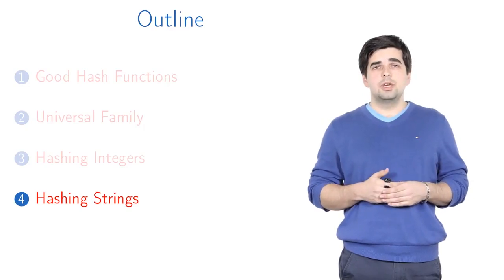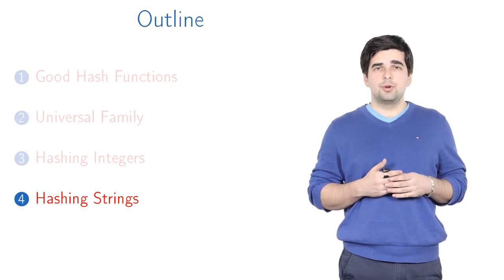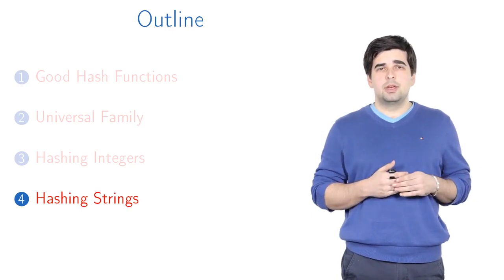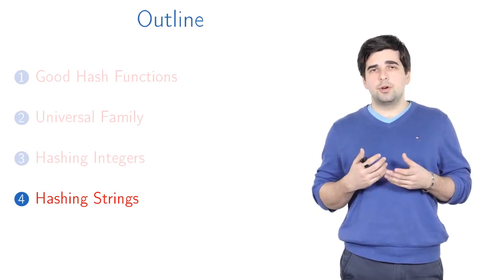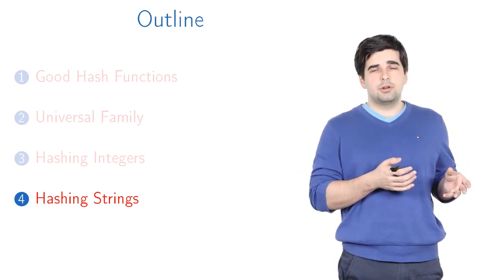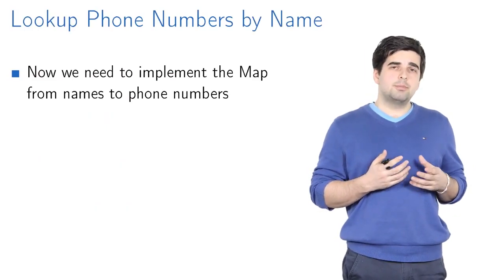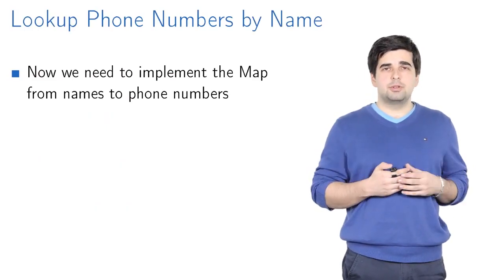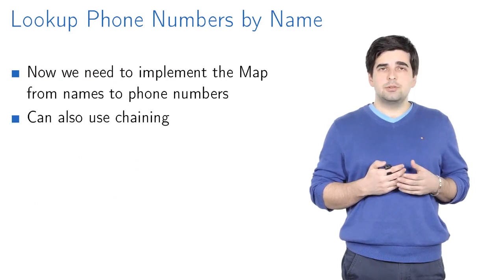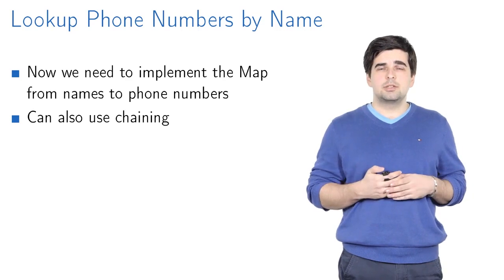Hi! In the previous videos, you learned how to quickly look up a name in your phone book given the phone number. We want to learn to solve the reverse problem: given a name, look up the phone number of the corresponding person. To do that, we need to implement the map from names to phone numbers.